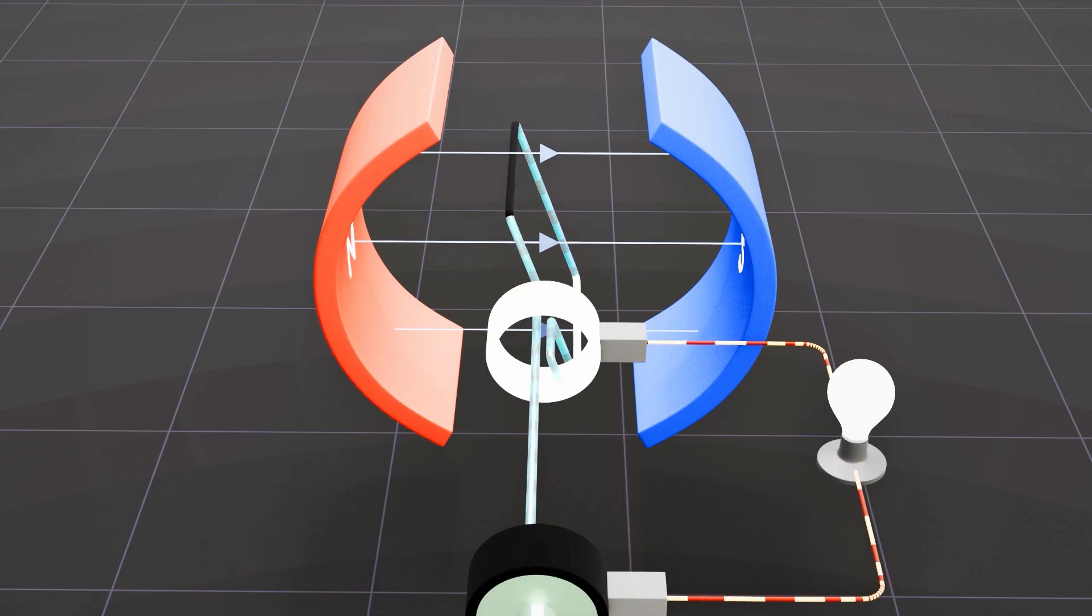As the coil reaches the vertical position, the change in the magnetic field ceases, resulting in the absence of current flow.